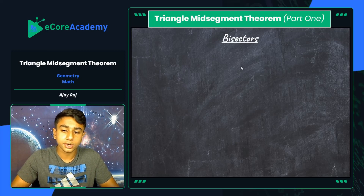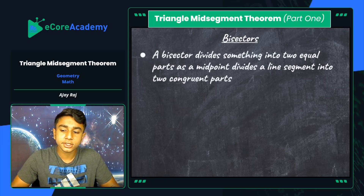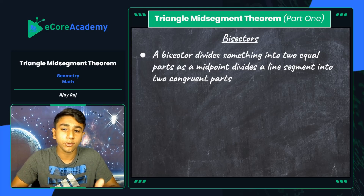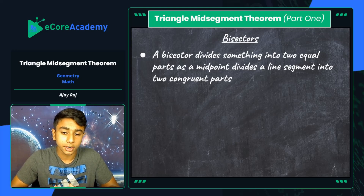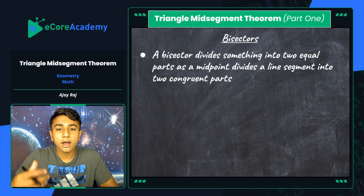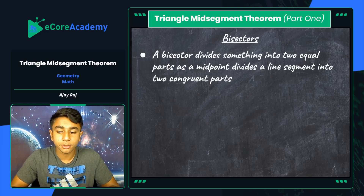Let's look at how bisectors play a role in the triangle mid-segment theorem and exactly what the theorem is. A bisector divides something into two equal parts, just as a midpoint divides a line segment into two congruent parts. With the triangle mid-segment theorem, we're going to be strictly focusing on our line segments — the side lengths of our triangle. The bisector will divide it into two equivalent parts after identifying the midpoint, which is halfway between both endpoints of that side length.